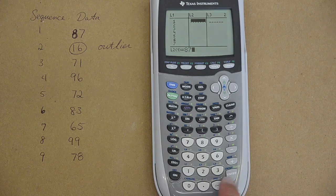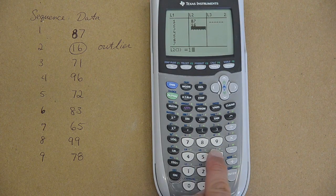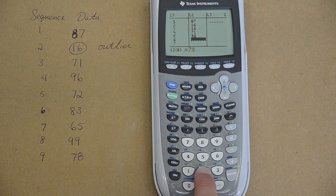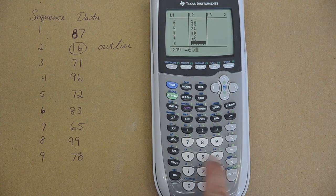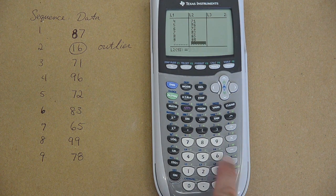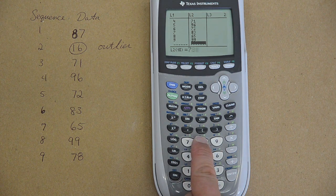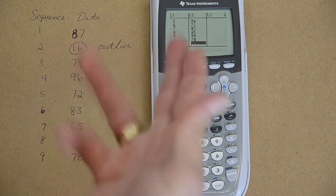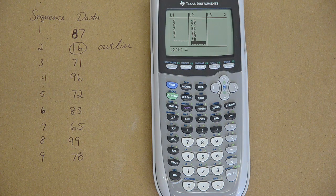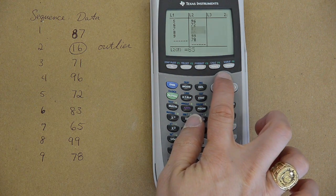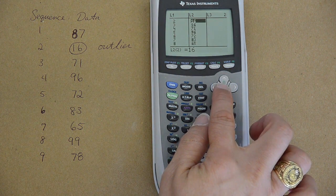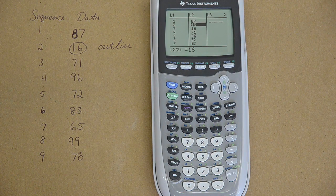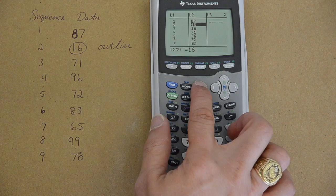So we have 87, 16, 16, 71, 96, 72, 83, 65, 99, and 78. Something happened, I should have the same number of data in each column. If I scroll back up here, I put 16 in there twice, I really didn't mean to do that. So if I want to take a number out of a list I accidentally typed in twice, I hit delete.